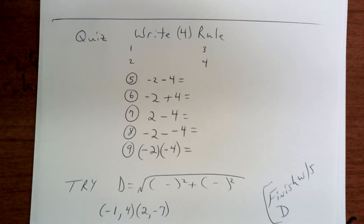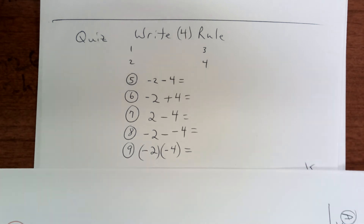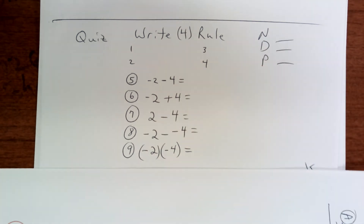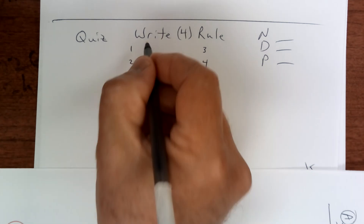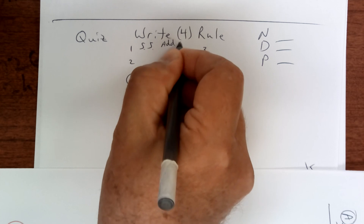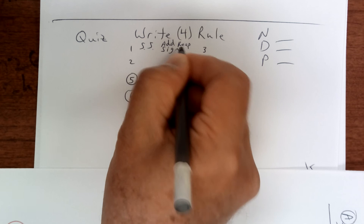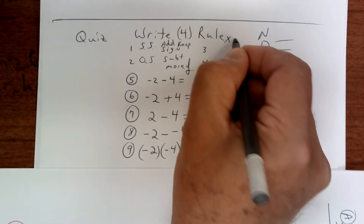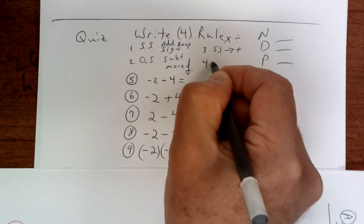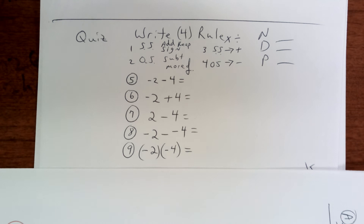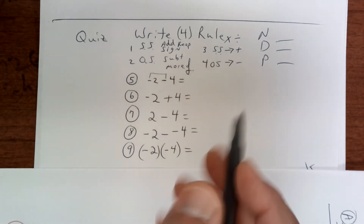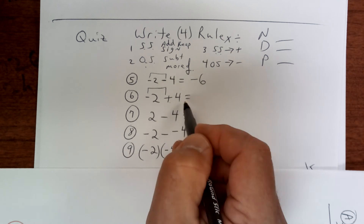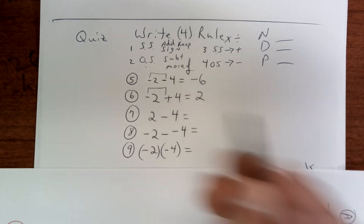On a new sheet of paper, work these problems — no talking, put name, date, and period. Same signs: you add and keep the sign. Opposite signs: you subtract and keep the sign of the one you have more of. When you multiply or divide, same signs give a positive, opposite signs give a negative. For this one, the signs are the same so that's negative 6. This one has opposite signs with more positives, so that's positive 2.